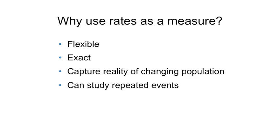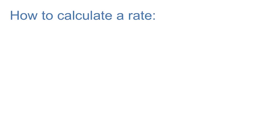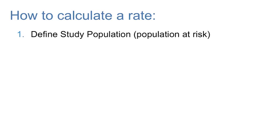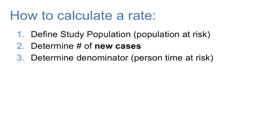The reason we don't use them all the time is that rate data can be more costly and challenging to collect. In order to calculate a rate, these are the following steps we use: First, we must define our study population, then determine the number of new cases of the disease or health outcome, and then finally specify our denominator, which is the person time at risk.